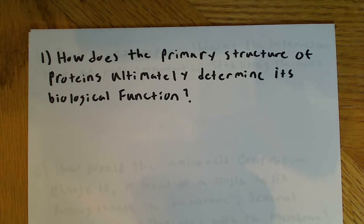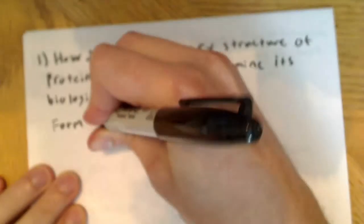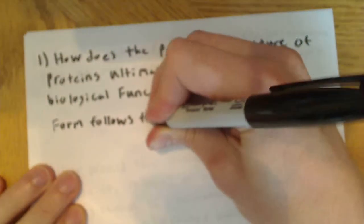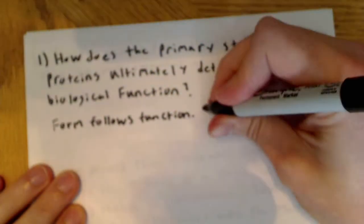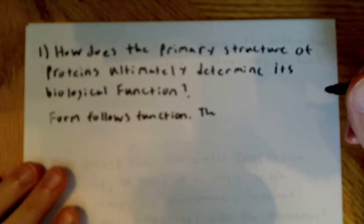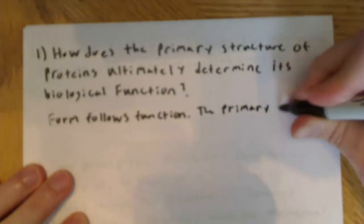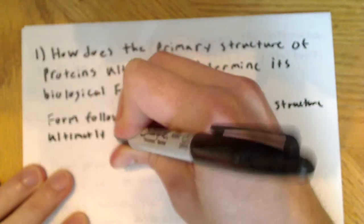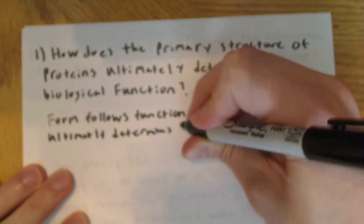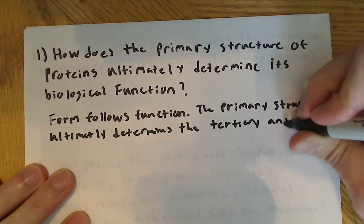We're asking how does the primary structure, which is the sequence of amino acids, ultimately determine its biological function? The thing to remember here is that form follows function. The primary structure ultimately determines the tertiary and quaternary structures.